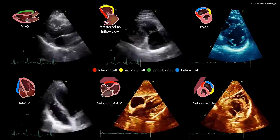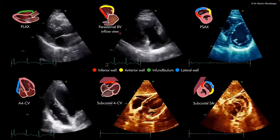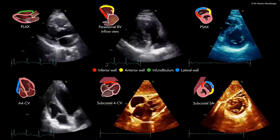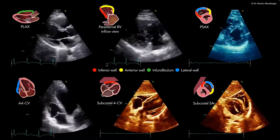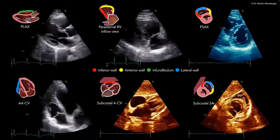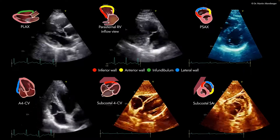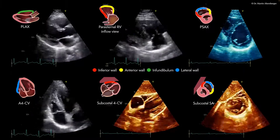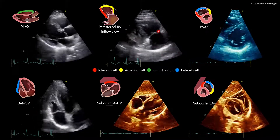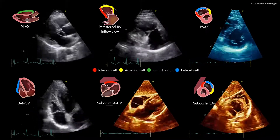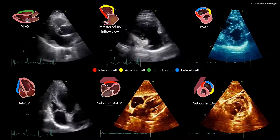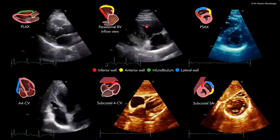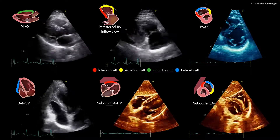If you use a parasternal view of the right ventricle with an inflow view, we have here the right atrium and the right ventricle. You can watch the other videos on the parasternal long axis to see how this view is achieved. You have two more walls you can find and quantify right ventricular function: the anterior wall of the right ventricle and, if you tilt enough, the inferior wall.